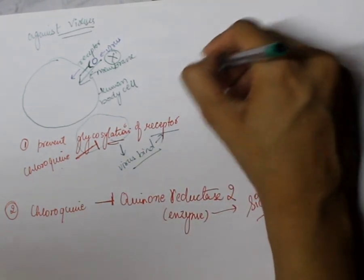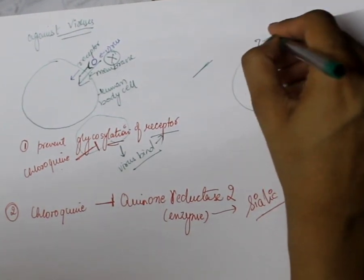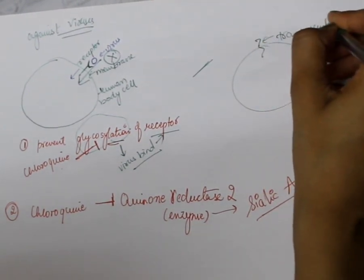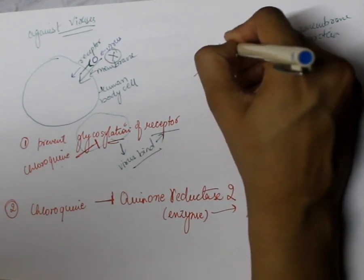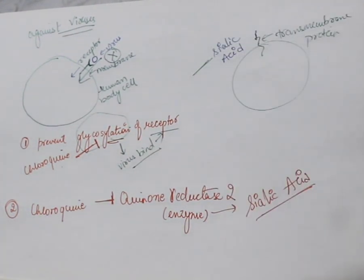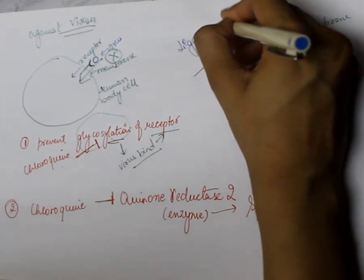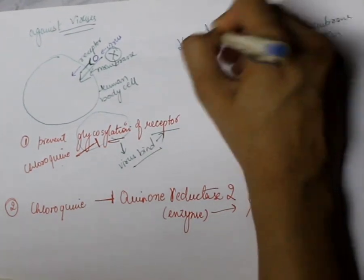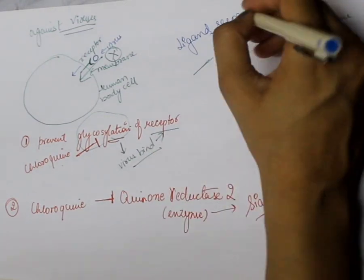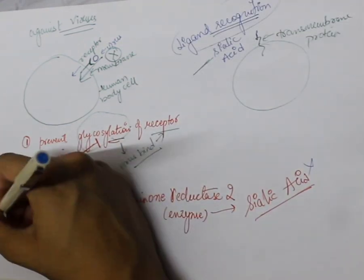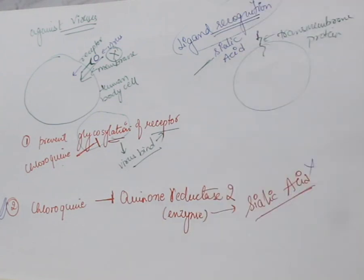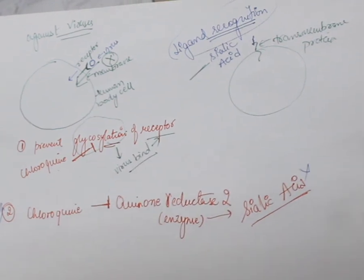Sialic acid is present on the transmembrane protein — that is, the receptor — on the outside of the cell. Sialic acid is very important for ligand recognition. If chloroquine blocks quinone reductase-2, no sialic acid is formed. With no sialic acid, there is no ligand recognition, and the process cannot proceed further. So in this second step as well, chloroquine prevents the entry of the virus.